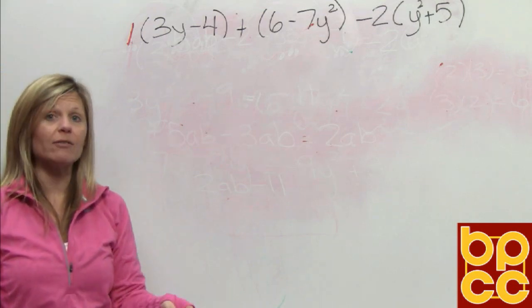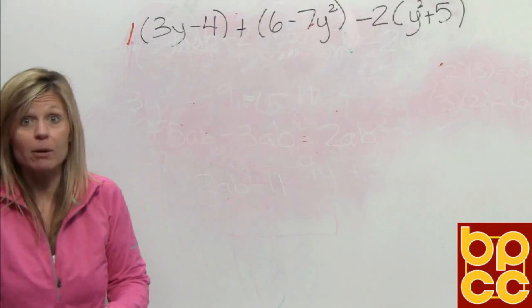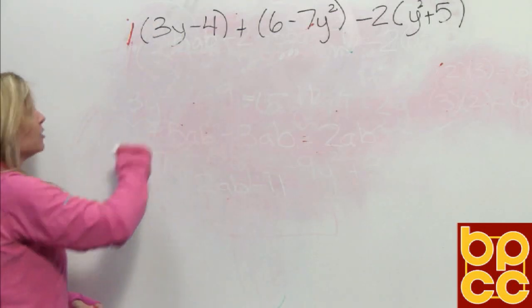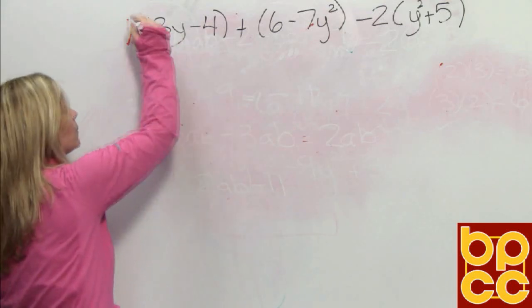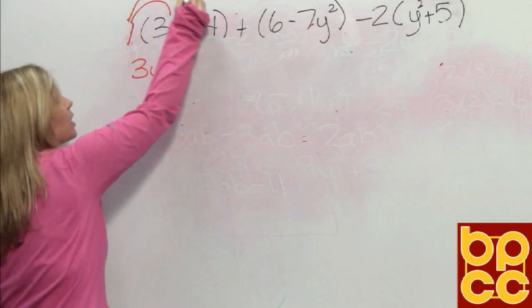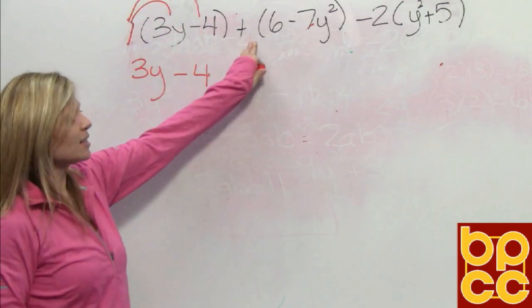Think of it in real life. Distribute means like distributing a flyer to give to everybody. So we're going to take that 1 and distribute it, which means we're going to multiply to each term, not just the first one, to each one. So 1 times 3y is 3y. 1 times a negative 4 is a negative 4.